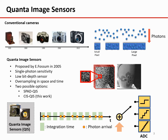Quanta Image Sensors, or in short QIS, is a candidate solution to this problem. It is proposed by Eric Fossum in 2005. This new type of sensor has single photon sensitivity and low bit depth. It has very high frame rate and spatial resolution, which allow us to first oversample in space and time, and then reconstruct the images using very carefully designed algorithms.